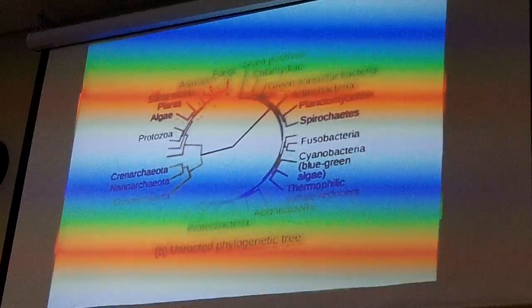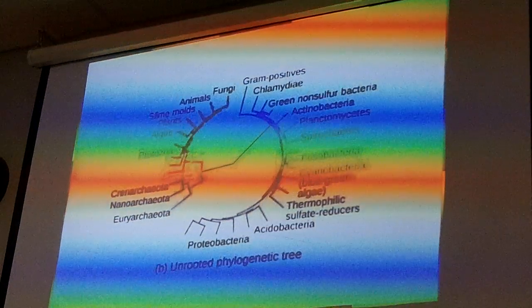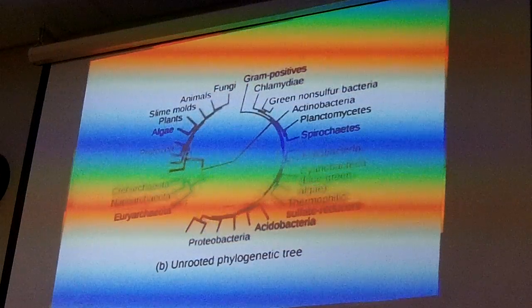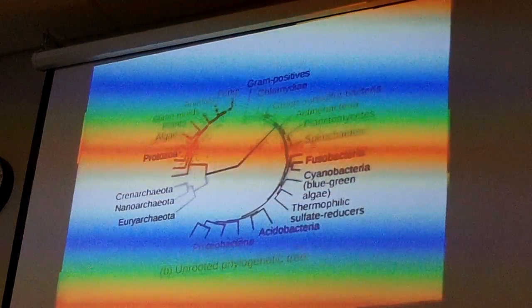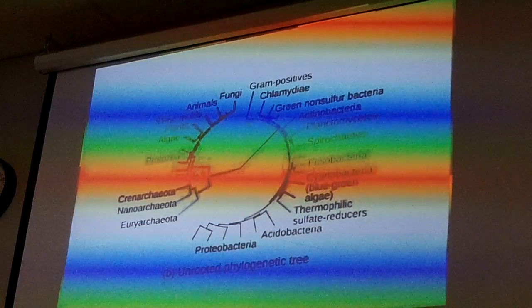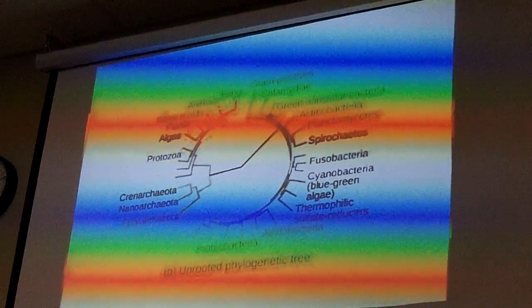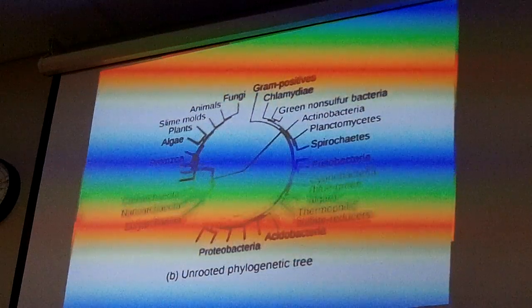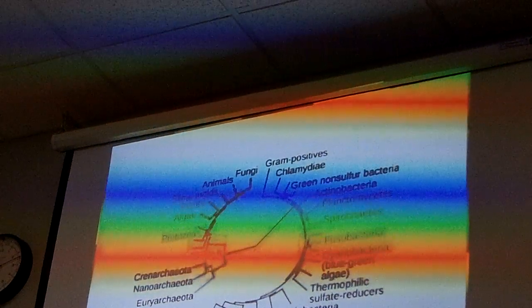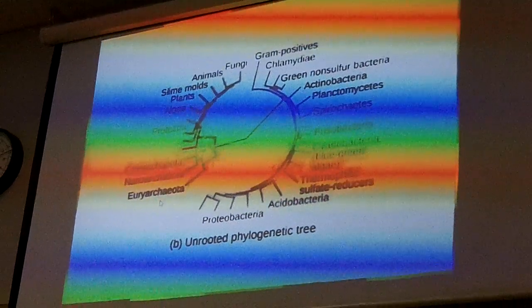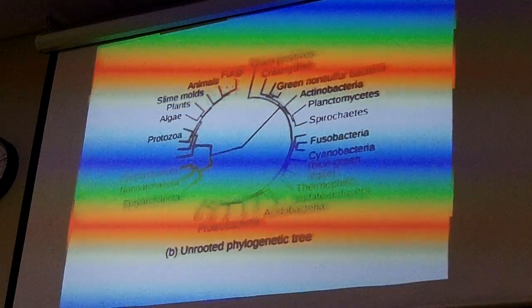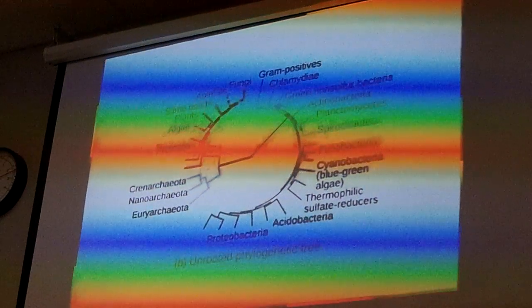This is another way of looking at an evolutionary tree — an unrooted tree. It starts in the middle and works outward. These are the archaeans, these are the bacteria, and these are the eukaryotes. Notice that archaeans are more closely related to eukaryotes — they're on the same branch — while the bacteria are on a different branch. There's something about our ribosomes that is similar to archaean ribosomes but different from bacterial ribosomes.